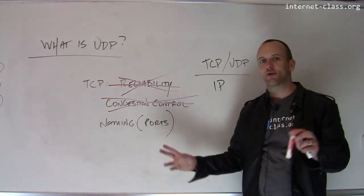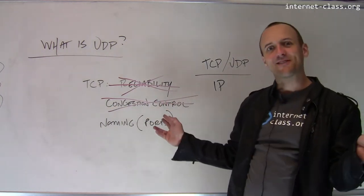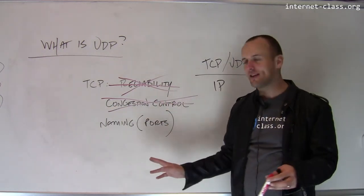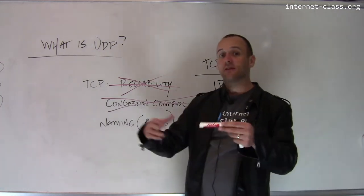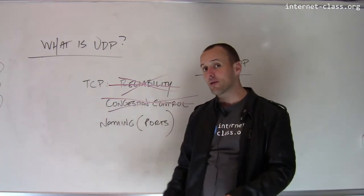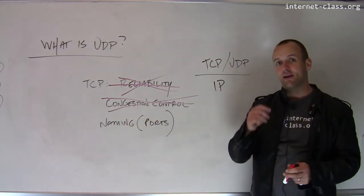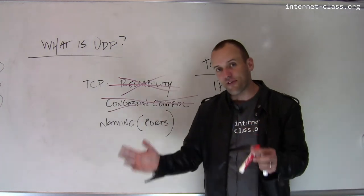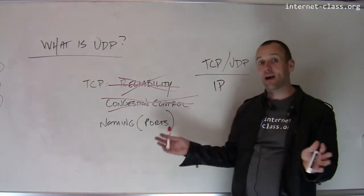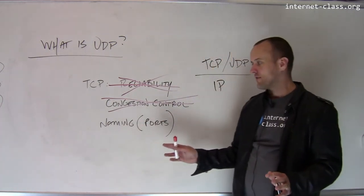If the data arrives, great. If it doesn't arrive, who cares — we're not going to do anything about it. If it arrives in a different order, who cares — we're not going to do anything about it. If data is being sent too fast for other clients, again, who cares — not going to do anything about it.